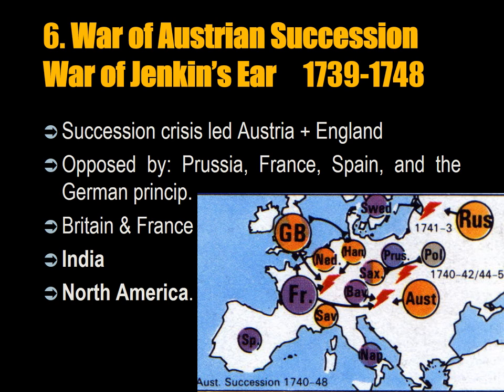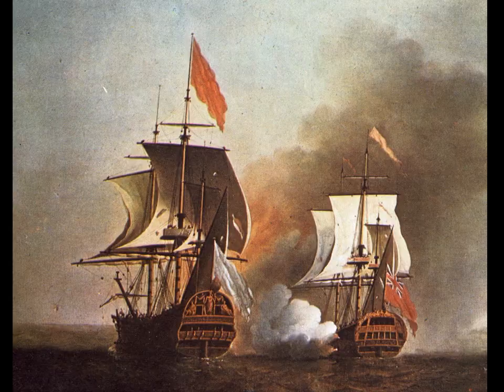The Sixth General War was the War of the Austrian Succession and the War of Jenkins' Ear, 1739 to 1748. It included all major great powers of the international system. It was a succession crisis that led Austria, supported by England, to be invaded by Prussia, France, Spain, and the German principalities. Austria ultimately prevailed. Britain and France continued their conflict over overseas territories in India and North America.